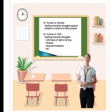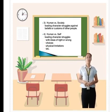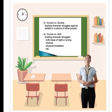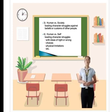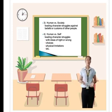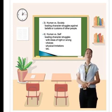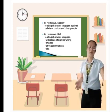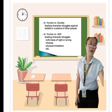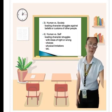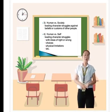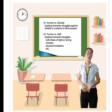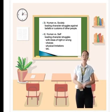The third one is human versus society. Human versus society is leading character struggles against belief or customs of other people. The example of this is human versus government and young persons versus traditions, human versus church at iba pa.